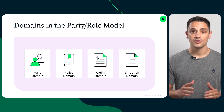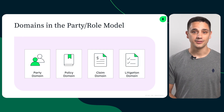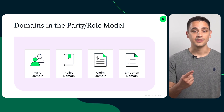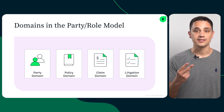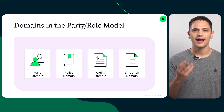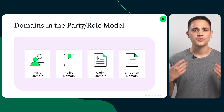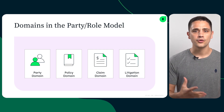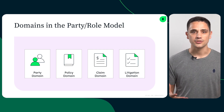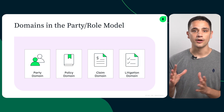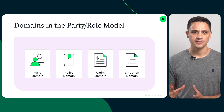There are four main domains in the Party Role Model: Party, Policy, Claim, and Litigation. Parties represent people, groups, or organizations that play a role in each one of the other three domains.